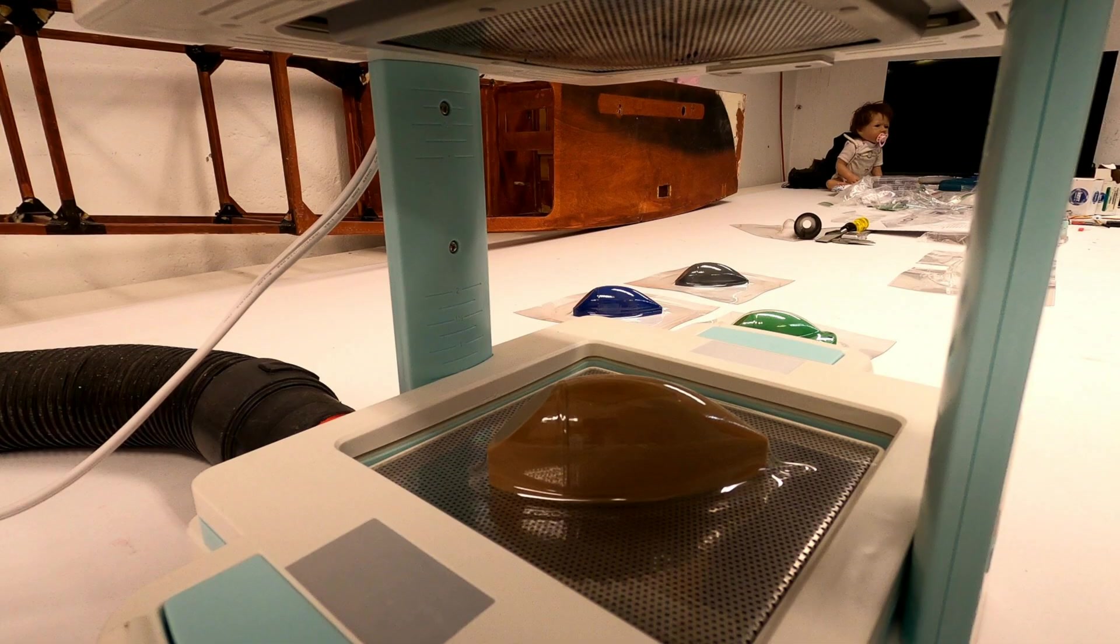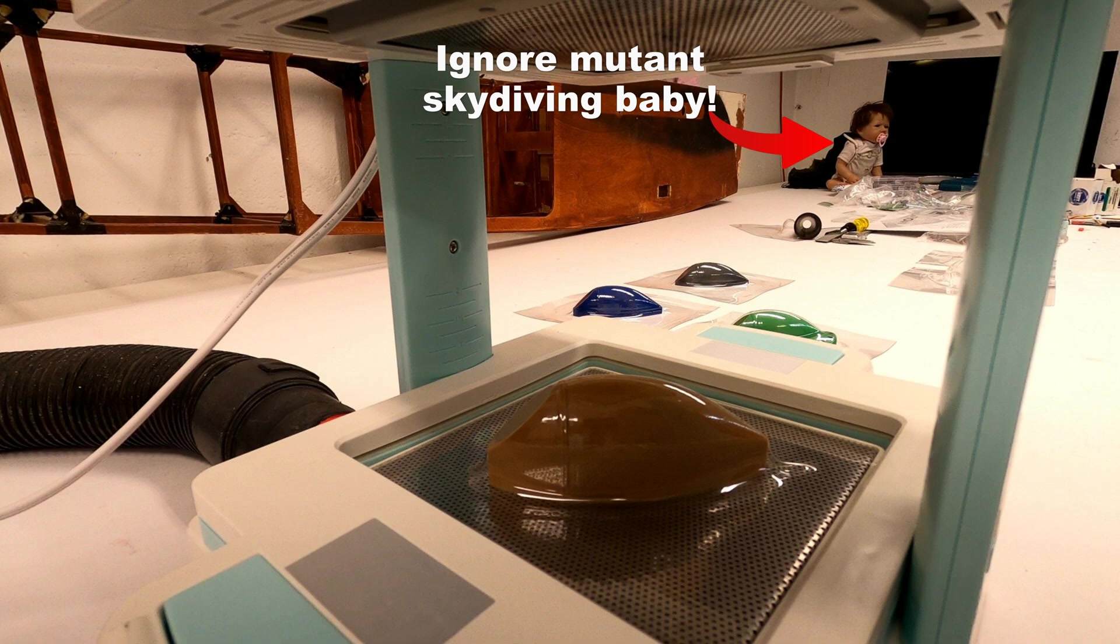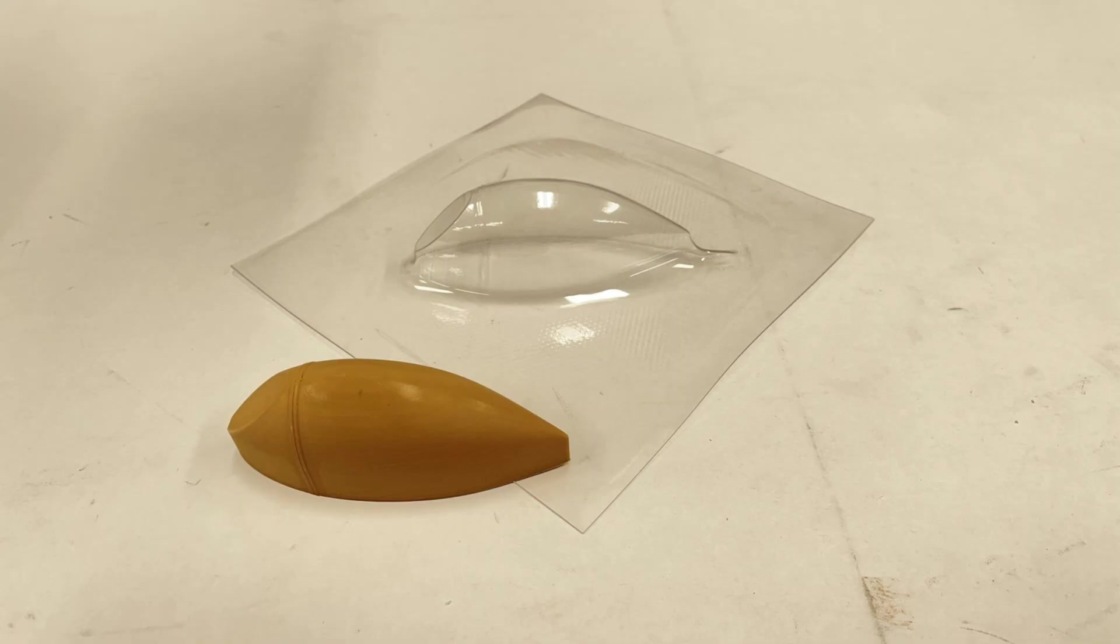If you don't know what vacuforming is, folks, basically it's where you heat up plastic, you pull it over something, and then you use a vacuum or suction to pull it down tight. And you get basically what you're trying to create. So this ultimately is what we're going to be making with this vacuum form machine.